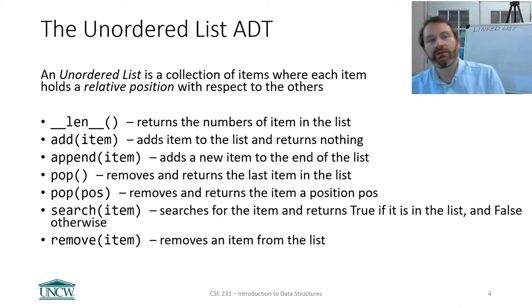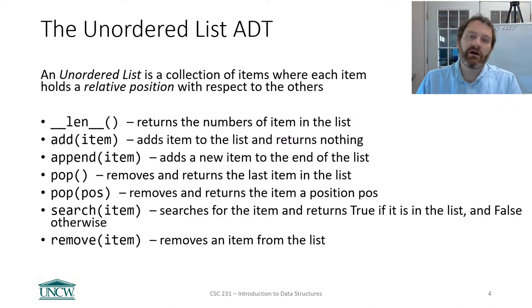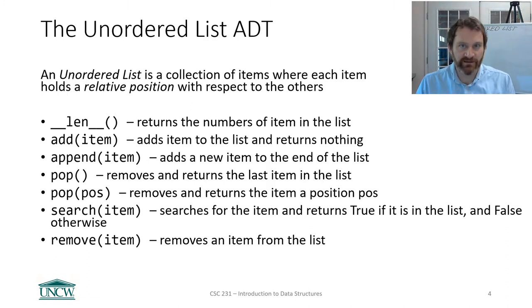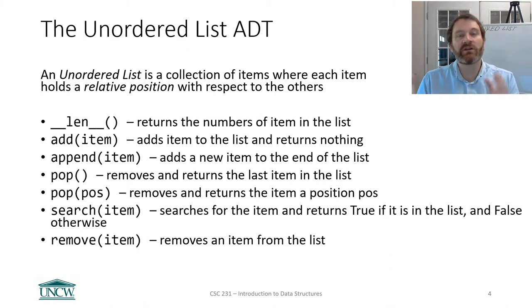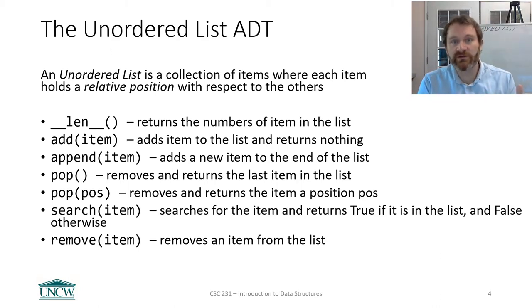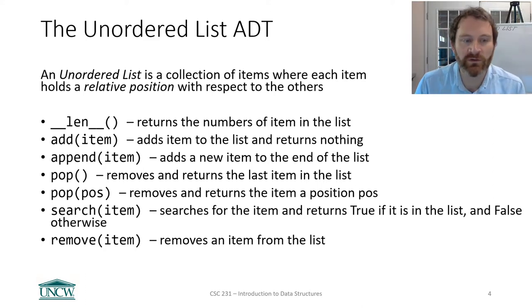Unlike the array list that was hard-coded in Python where you didn't have a lot of control — you just used it — this time you're going to write it from scratch and you are responsible for implementing all those list behaviors. An unordered list abstract data type is a collection of items where each item holds a relative position with respect to the others. The items are kept in the order you insert or remove them — they're not sorted.